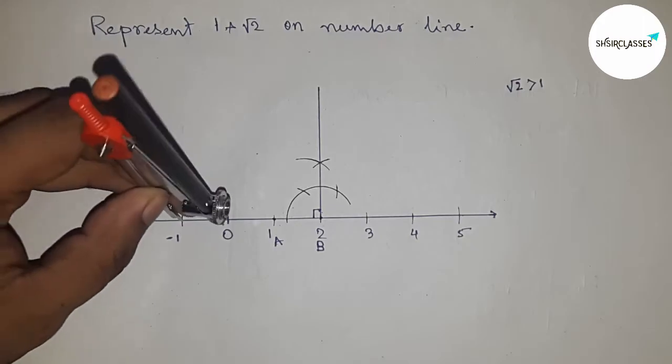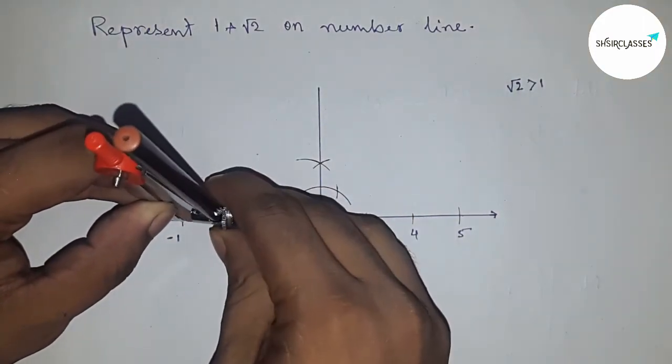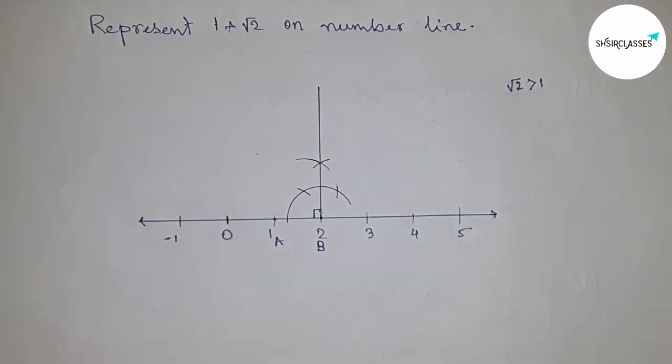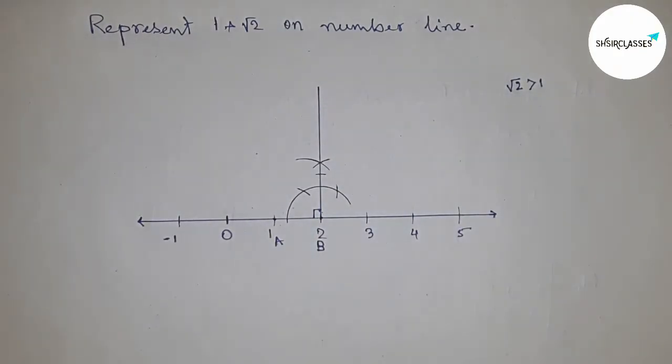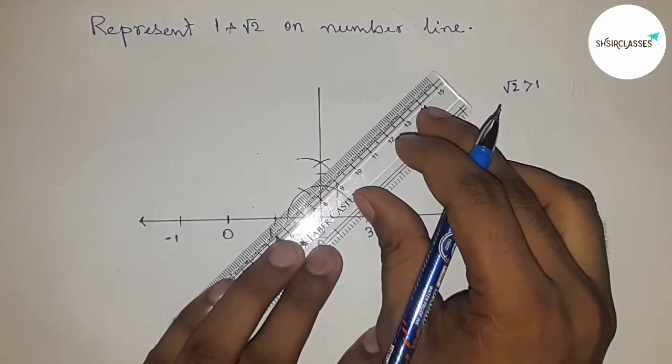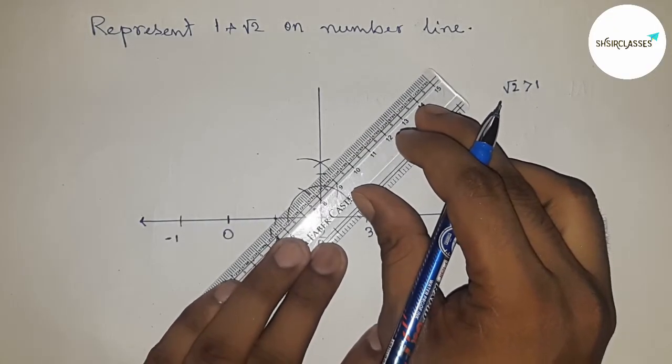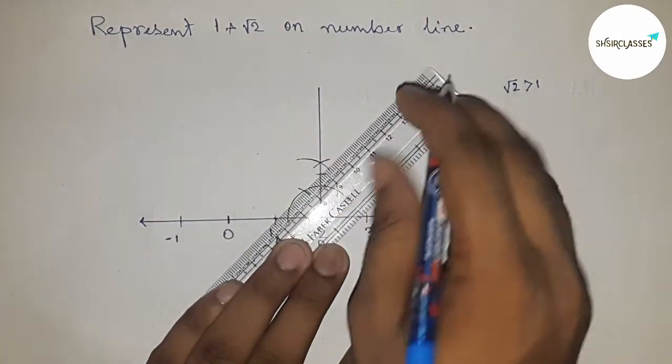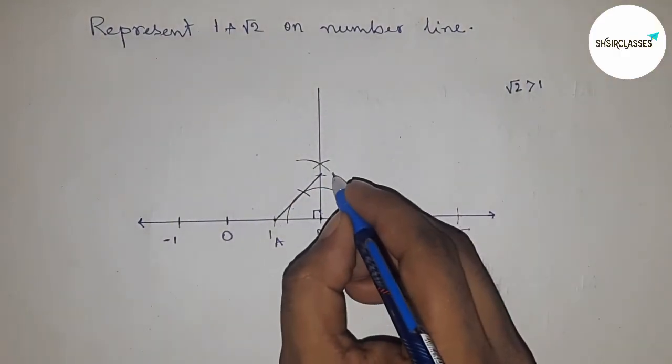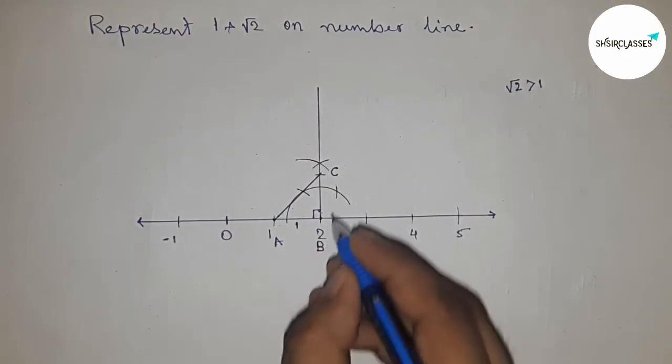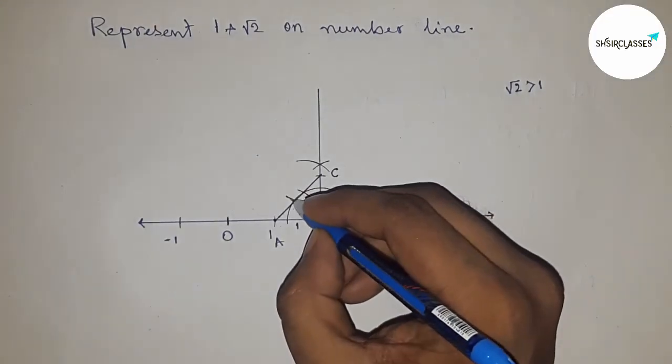Taking the length between any two numbers with the compass and cutting the line. Next, joining 1 and this point to get the hypotenuse. This is point C, this is 1 unit, this is 1 unit, and obviously the hypotenuse is √2.